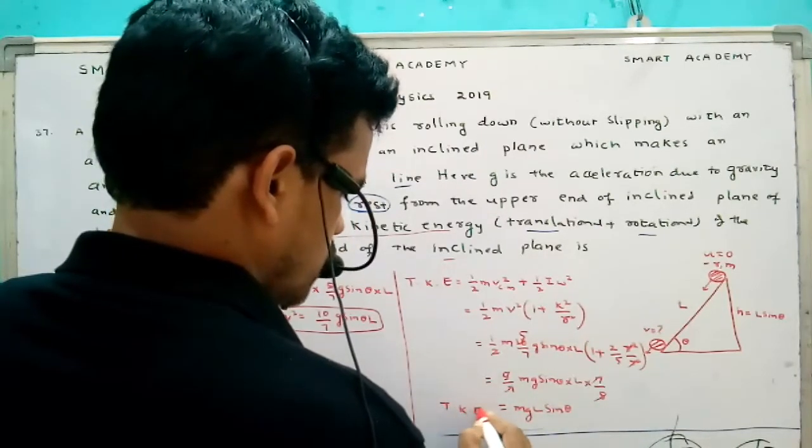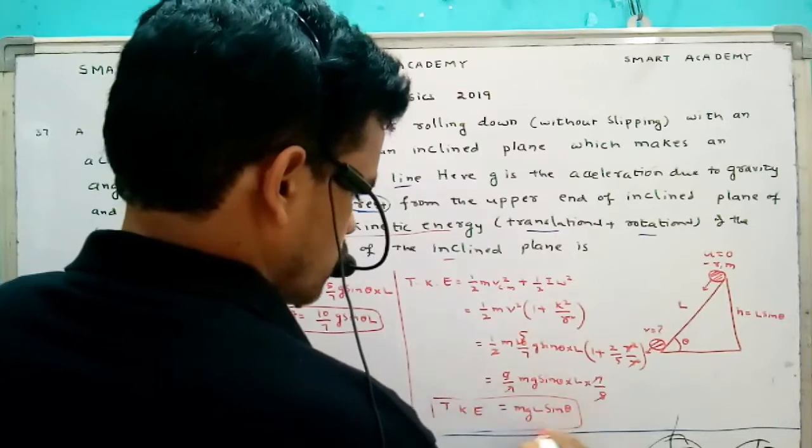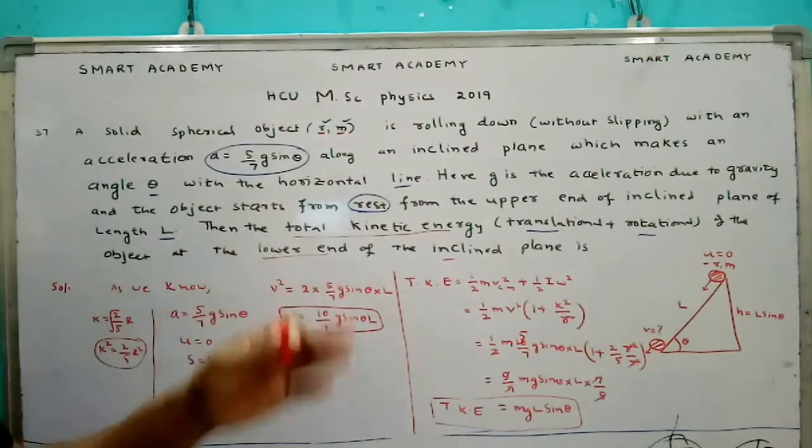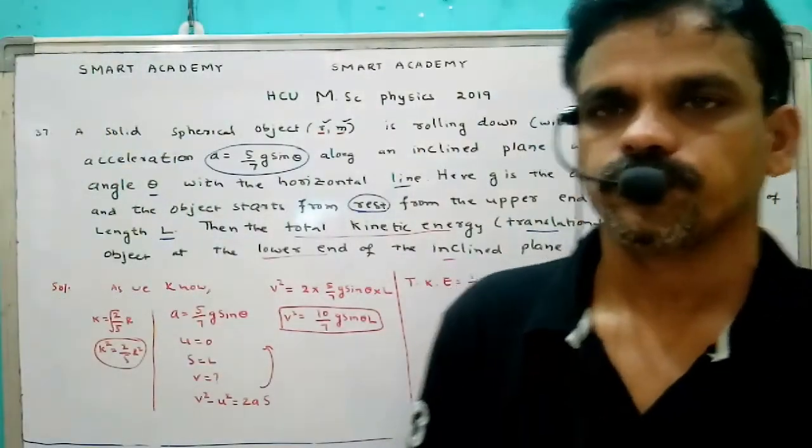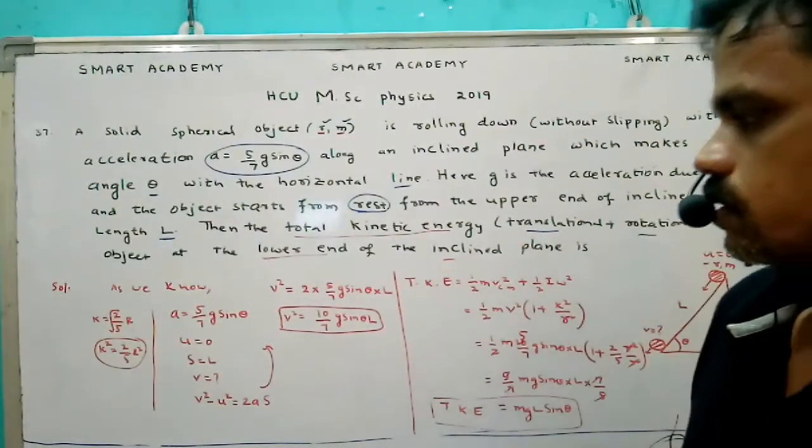So that is total kinetic energy of a spherical object at the lower end of the inclined plane. So here we have the question this one.